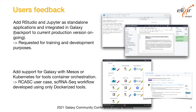For example, there is the R-CASK use case, which is a single-cell RNA-seq workflow that is developed and used only as a Docker container, so we need to provide enough resources, and we will do this with Mesos or Kubernetes, which are both now available out of the box.